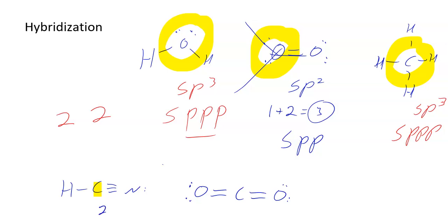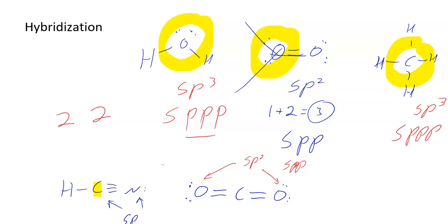In hydrogen cyanide, the carbon has one single bond and one triple bond — that's two bonds and no lone pairs, so two positions in space. An s and a p hybridized gives us sp hybridized for that carbon. The nitrogen is also sp hybridized: it has one lone pair (one position) and one triple bond (one position) — two positions total, so sp hybridized as well.